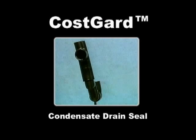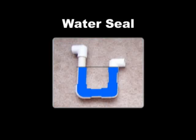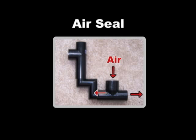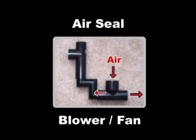You are about to learn why the use of condensate P-traps on air conditioners are unacceptable, and be introduced to an alternative that works: the Cost Guard condensate drain seal. The P-trap requires water from an unreliable source to form a drain seal — condensate from the cooling coil. The Cost Guard device uses air produced by the blower or fan to form a seal, and eliminates all the problems caused by the failure-prone condensate P-trap water seal.